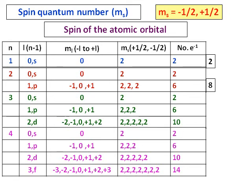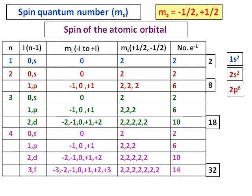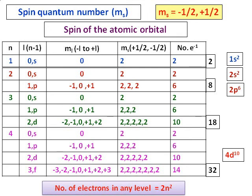So if I consider my building: 2 people in the first floor, 8 in the second, 18 in the third, and 32 in the fourth. We represent this notation as: for n = 1, we write 1s², for n = 2 it's 2s² and 2p⁶, for a d orbital at n = 4 it's 4d¹⁰. The general formula for the number of electrons in any level is 2n², where n is the principal quantum number. Using this, you can calculate how many electrons can be in any level.